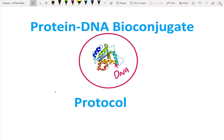Hi everyone, my name is Carter and today we're going to be discussing how to make a protein-DNA bioconjugate using unnatural amino acids. What's really cool about this technique is that it's site-specific, which is kind of unique among all the other techniques used to modify proteins. The goal of this video is to provide an overview of the technique using a Nature paper by Sinovich et al., linked in the description.